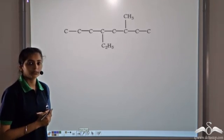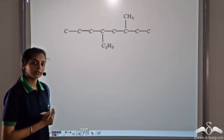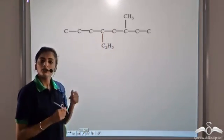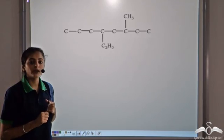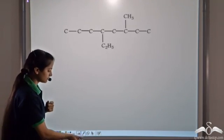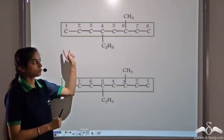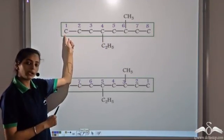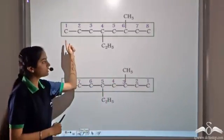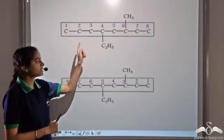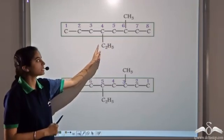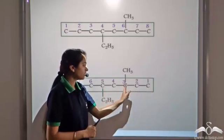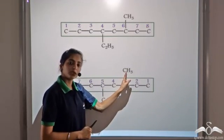Let's take another organic compound and find its prefix. We again observe two different substituents. The first step remains the same: find the longest carbon chain. This is the longest carbon chain, and we can start numbering either from the left or from the right. Starting from the left, the first substituent is encountered at the fourth position. Starting from the right, the first substituent is encountered at the third position.